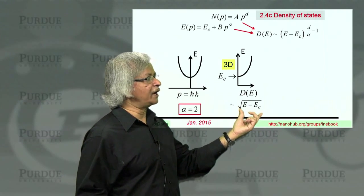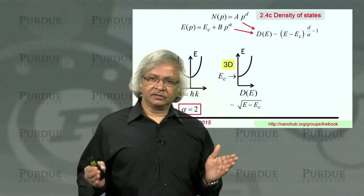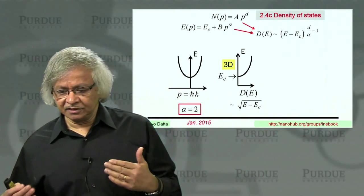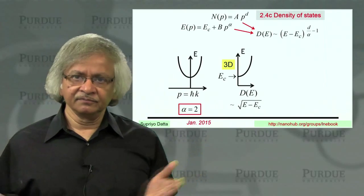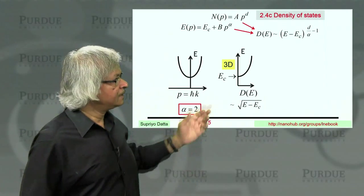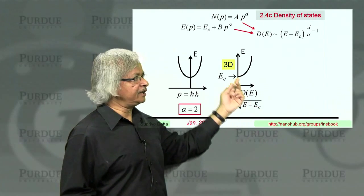The density of states looks like E minus Ec to the power half, which is the square root of E minus Ec. This is the most common form that you'd see for density of states - this parabolic band assuming a bulk 3D semiconductor. The density of states goes as the square root of the energy.